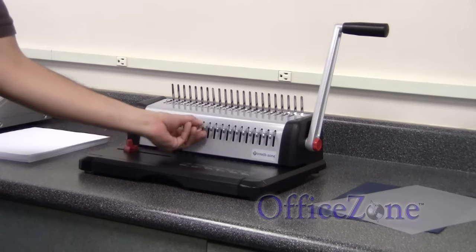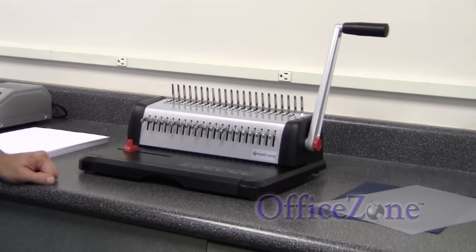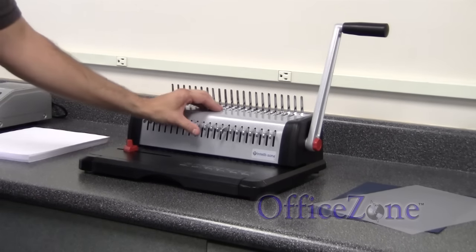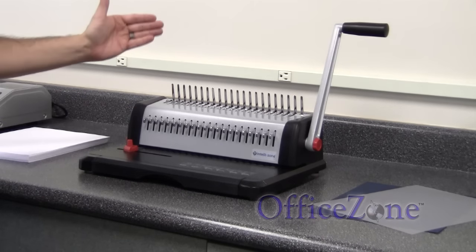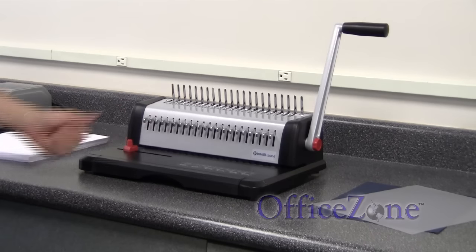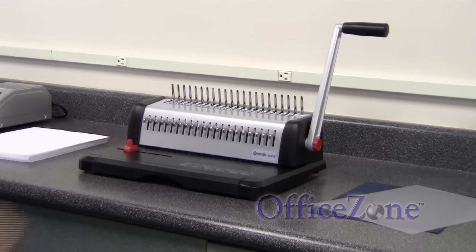This particular one has disengaging dies, sometimes referred to as selectable punching pins. Not all comb binding machines are going to have that. If you're just punching 8.5 by 11 paper, not necessarily a must-have feature. I personally like it if you're punching larger or smaller sheets of paper.